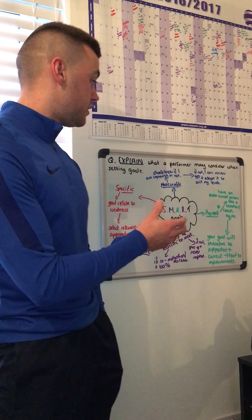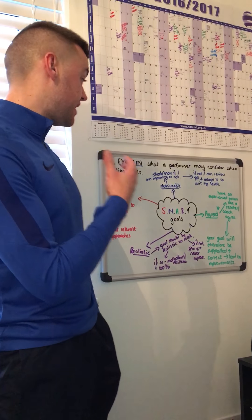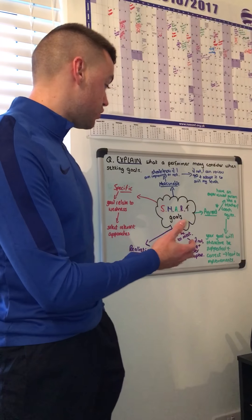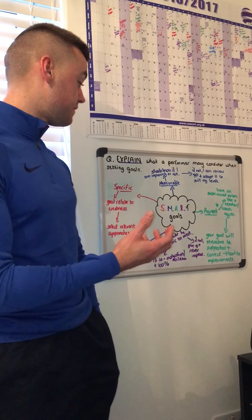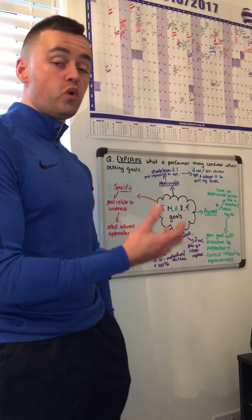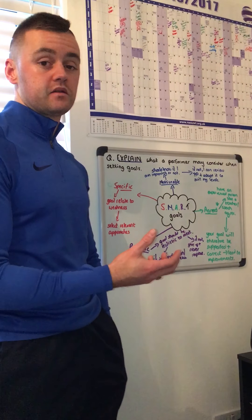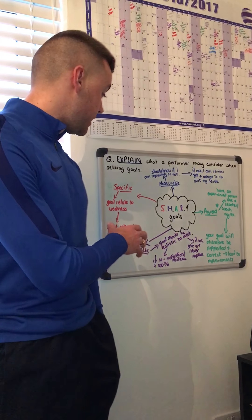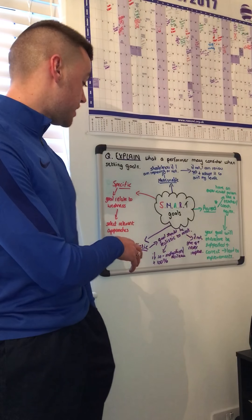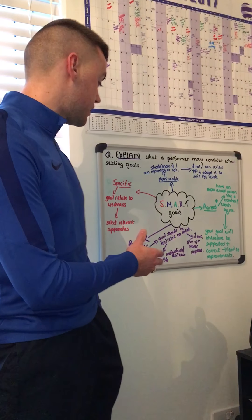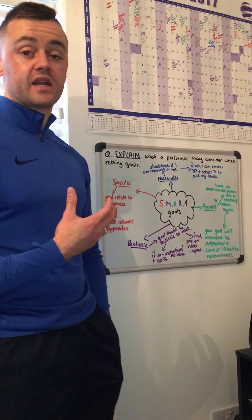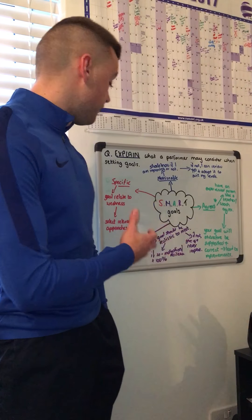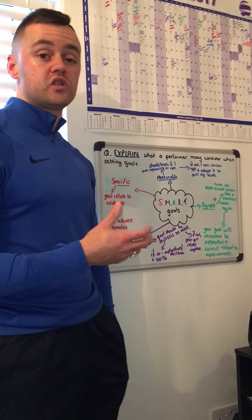After that we move on to the M — Measurable. Give the definition even though you don't achieve the mark. A Measurable goal will allow me to know if I'm improving or not. No marks given for that, but with the next expansion you will get your mark. This means that if I am not improving, I can then review the training programme and adapt it to suit my actual ability levels — and you will get the mark for saying that.